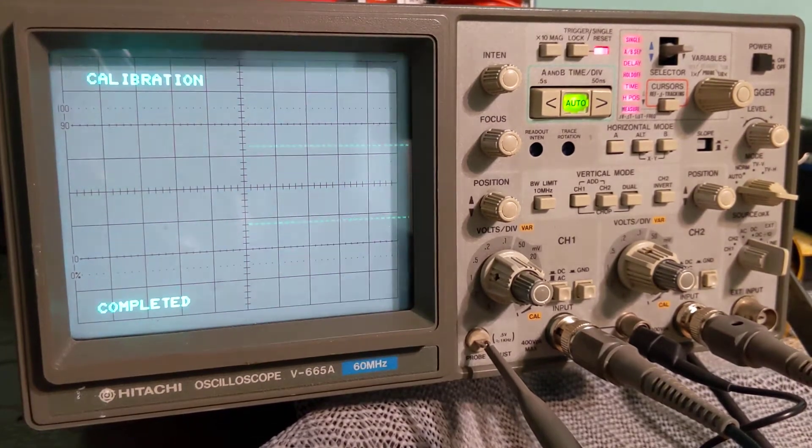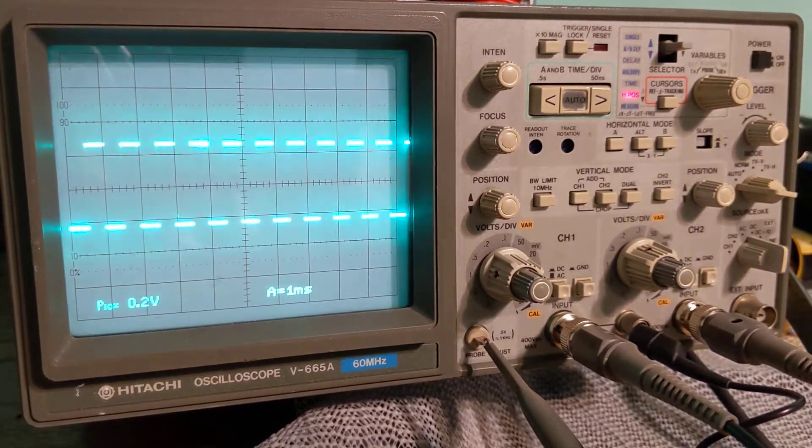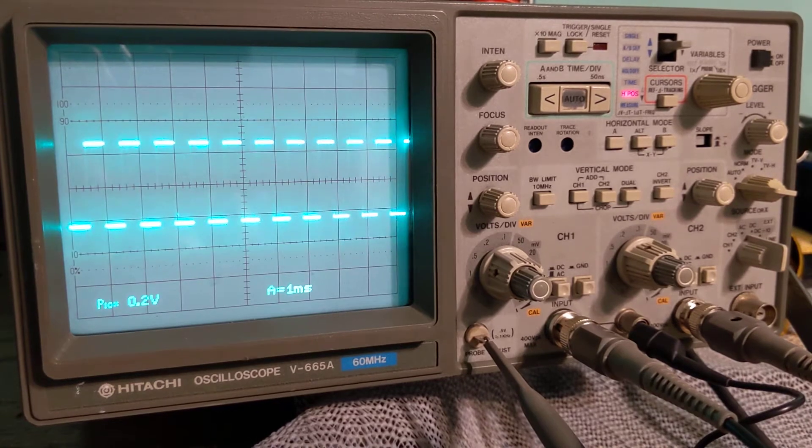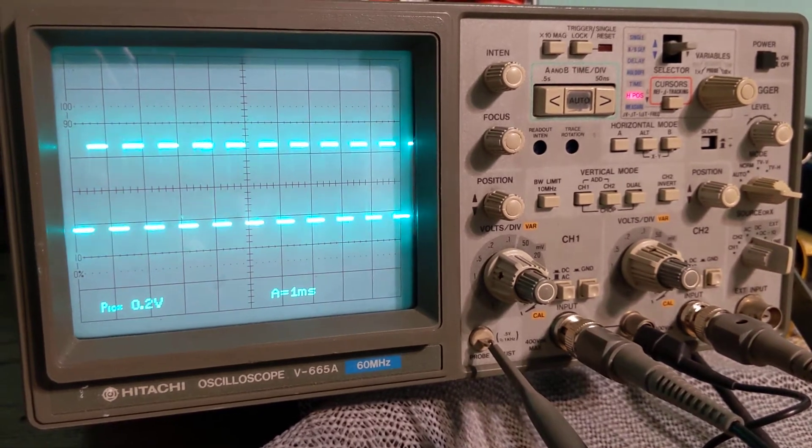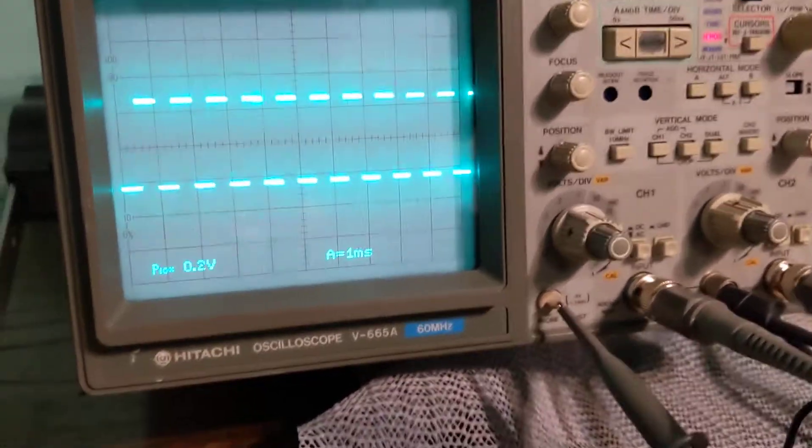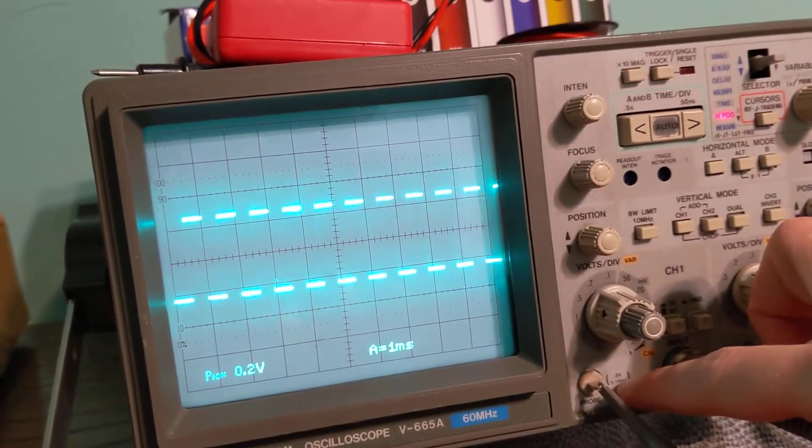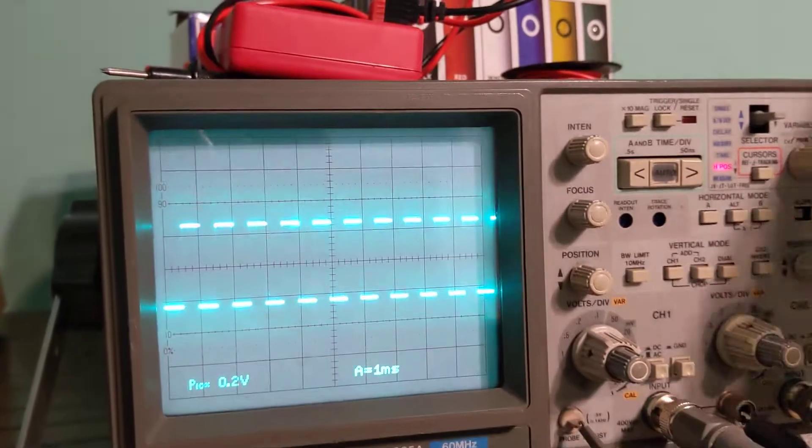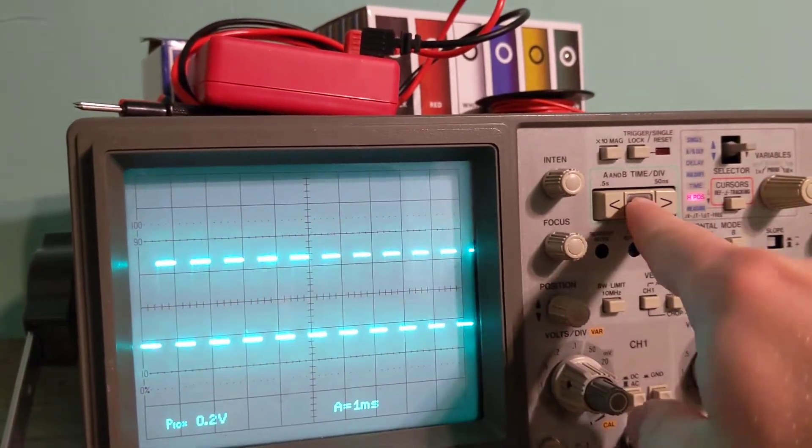Calibration completed. Alright, so what this should look like is a square wave with 0.5 volts at 1 kilohertz.